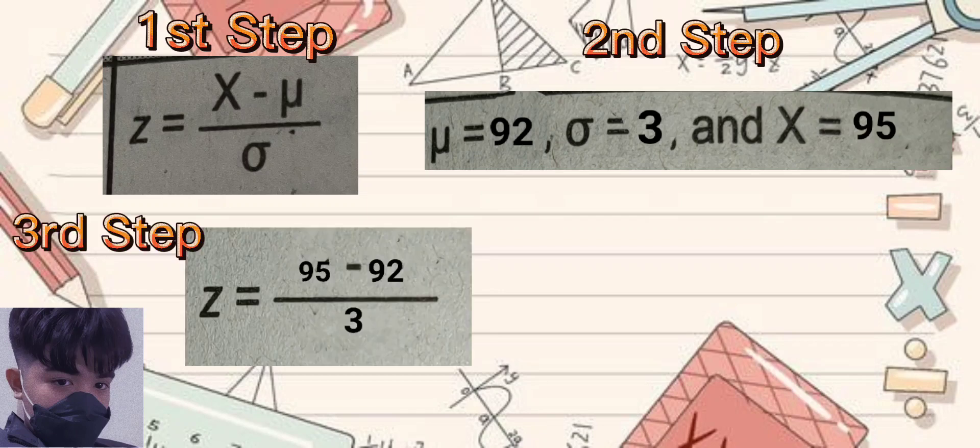For the next step, we will substitute the given values in the computing formula. So, it will be Z is equal to 95 minus 92 over 3. And the answer will be 3 over 3 or 1. And that explains that the Z values that correspond to the raw score, which is 95,